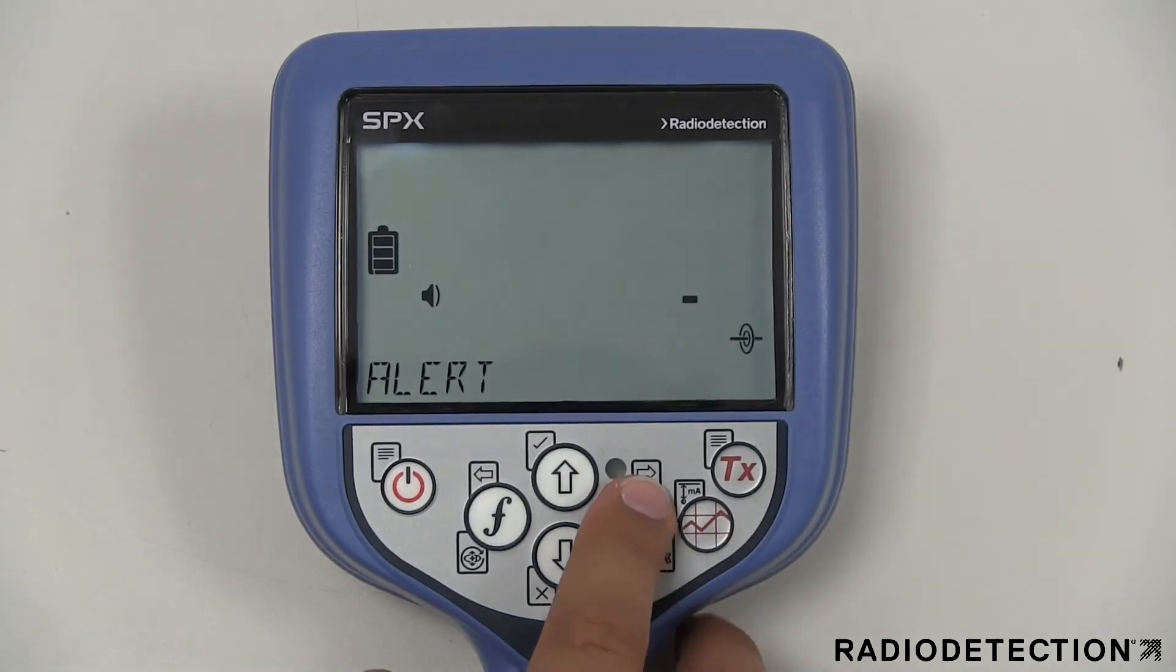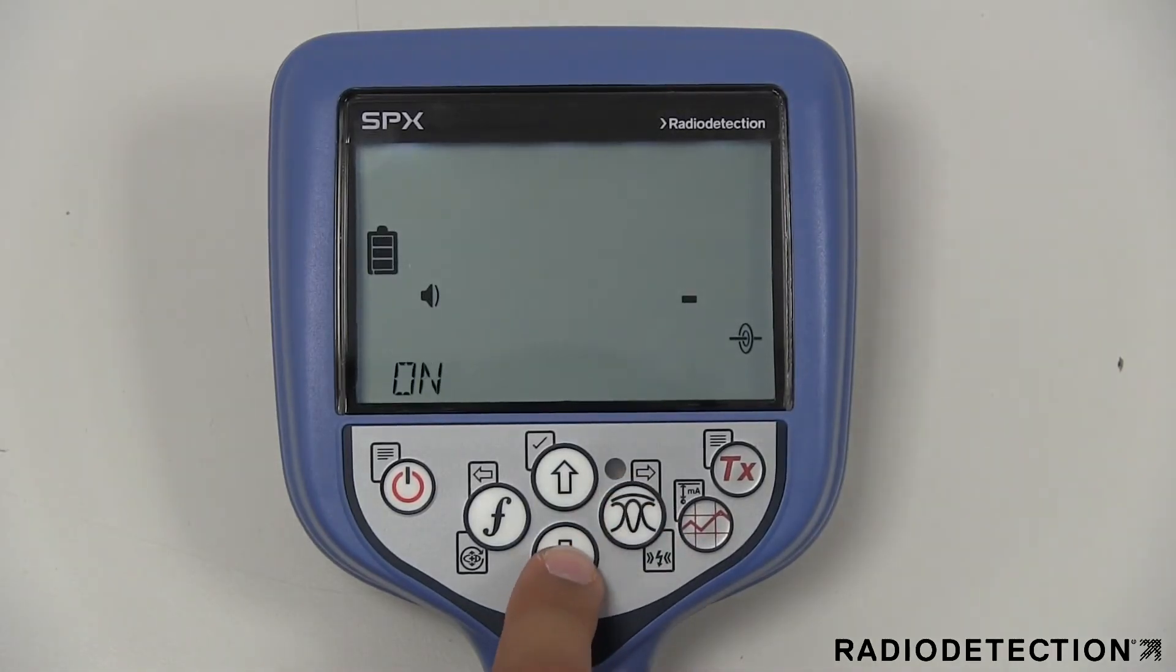The alert option allows you to enable or disable strike alert which tells you when a shallow utility has been detected.